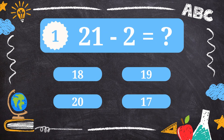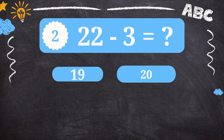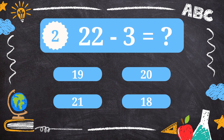Question 1. What is 21 minus 2? 19. Question 2. What is 22 minus 3? 19.